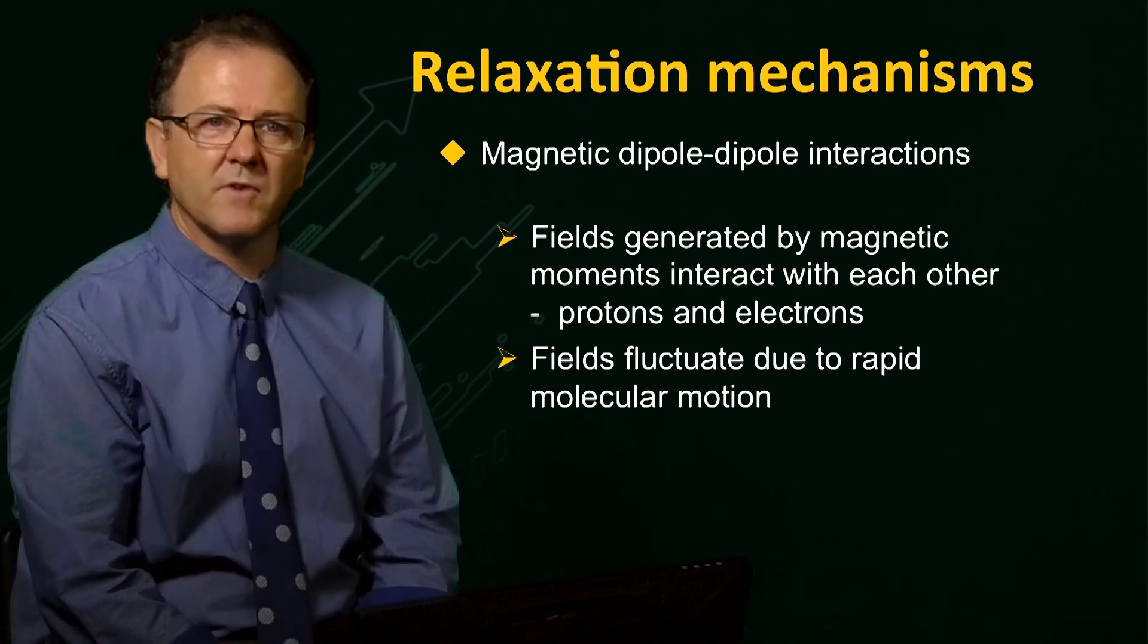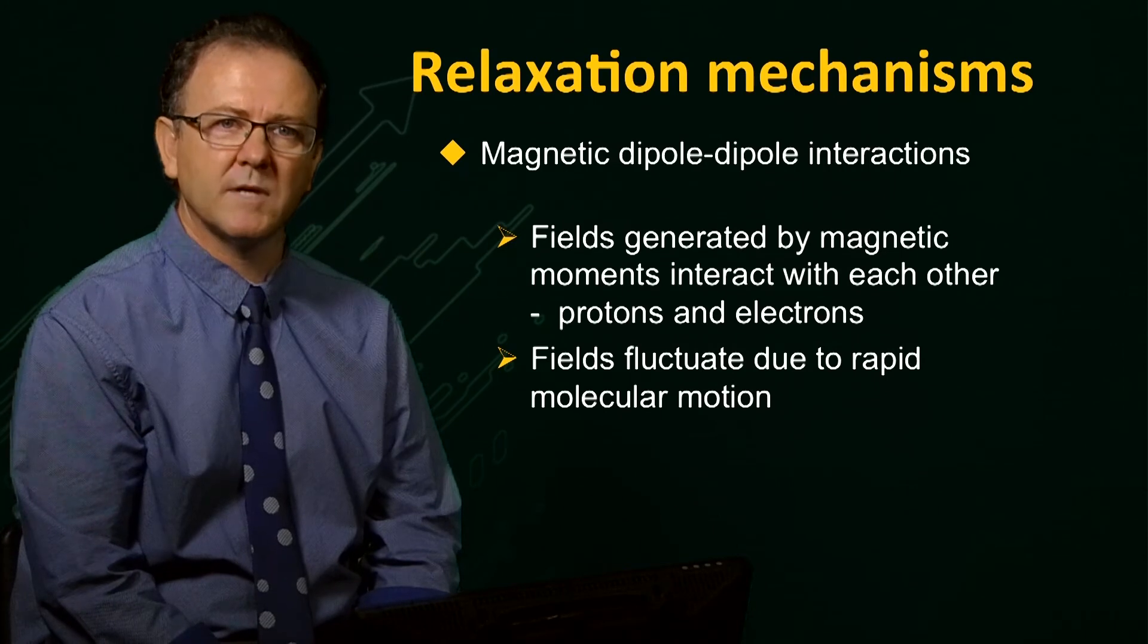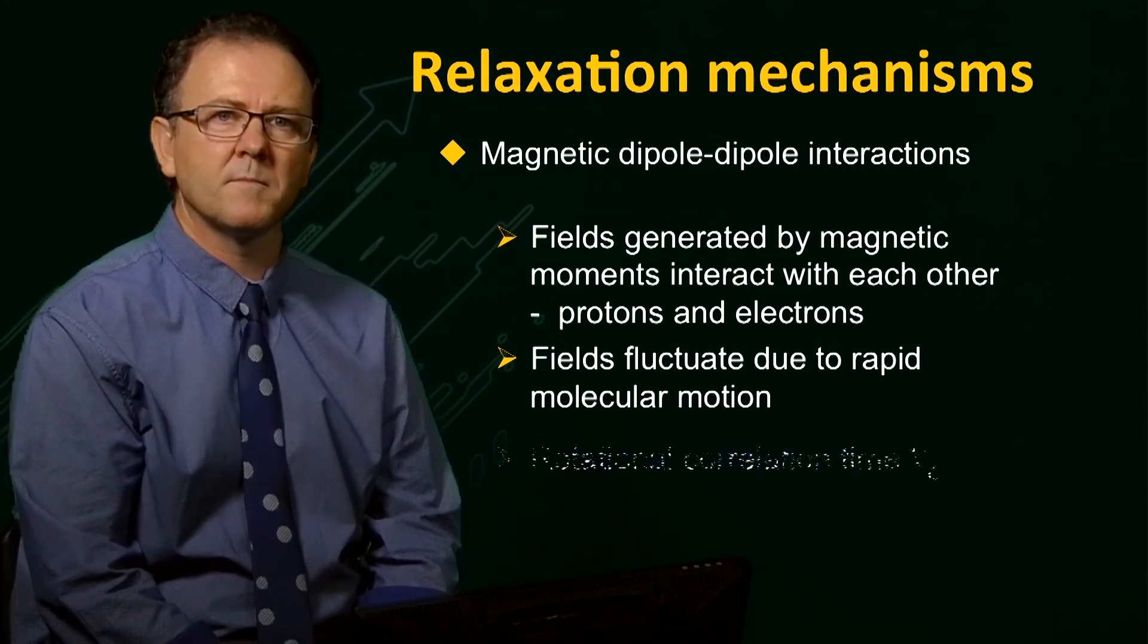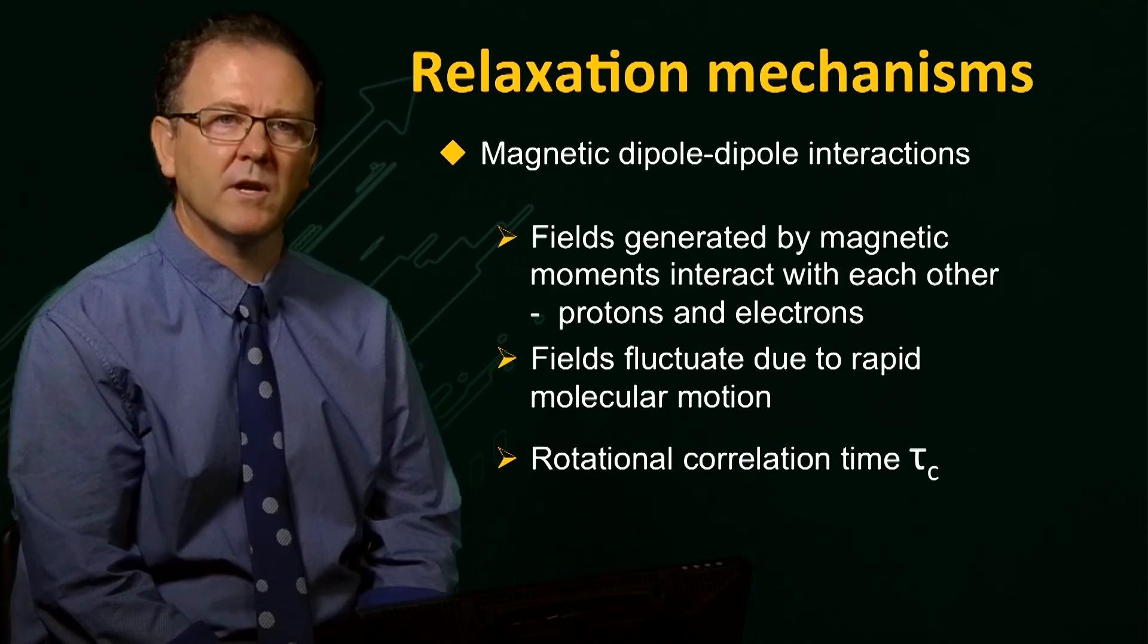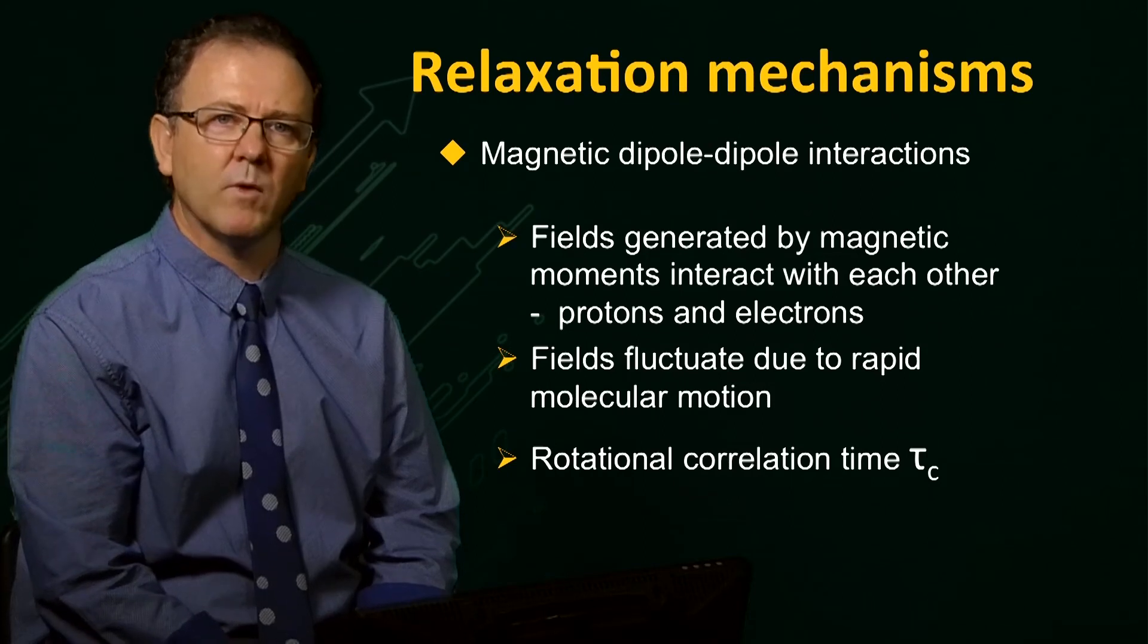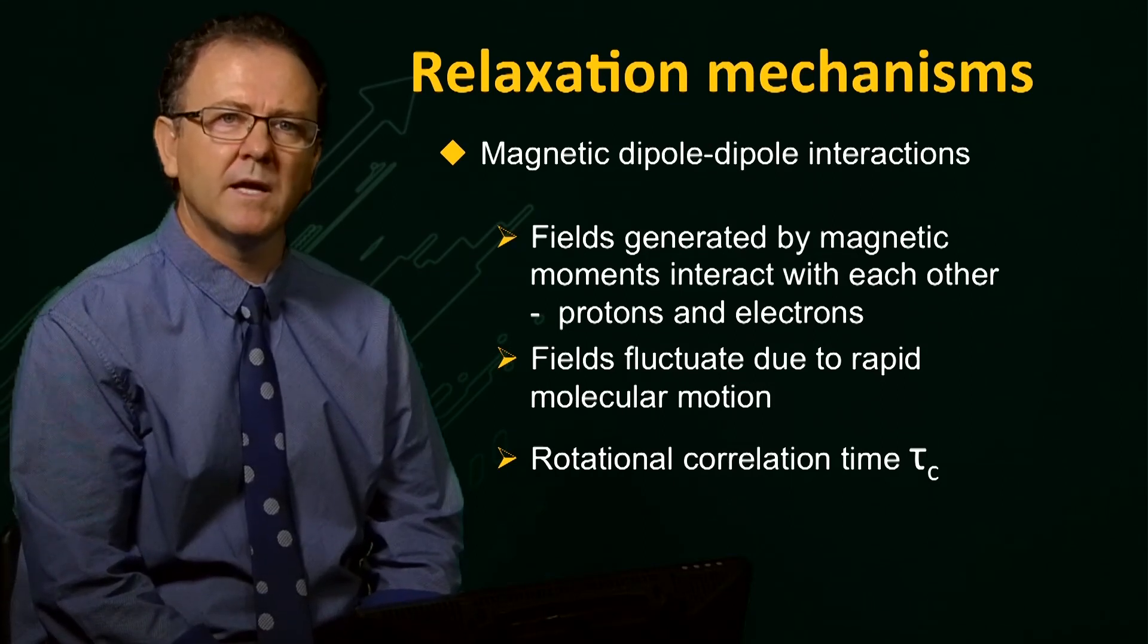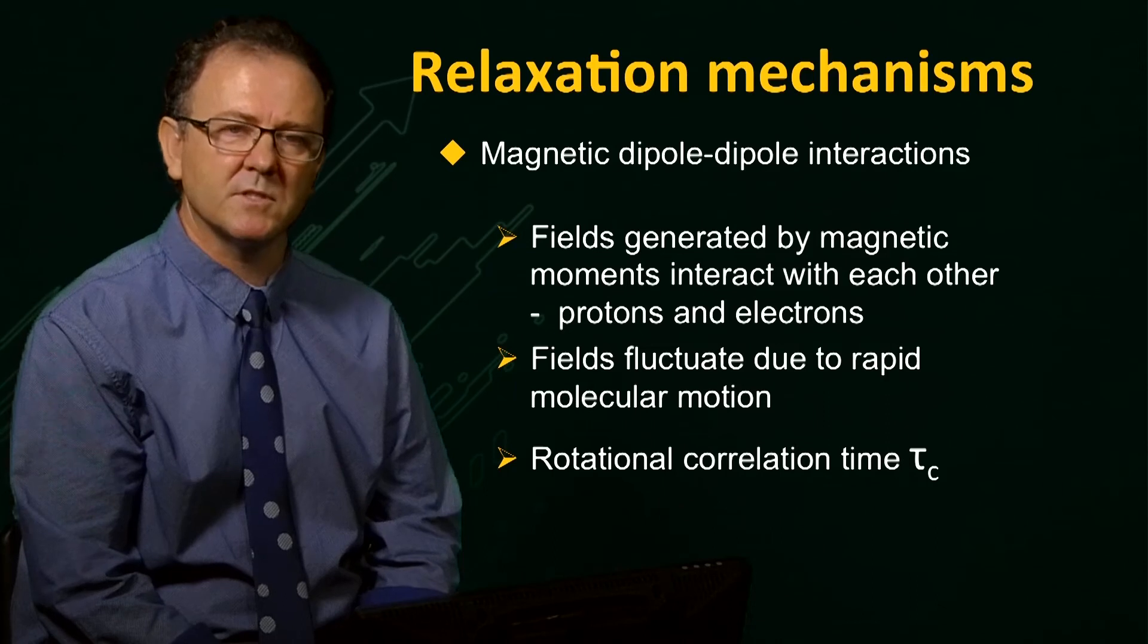These local fields fluctuate rapidly as the molecule tumbles and rotates within its environment. This molecular motion is characterized by a rotational correlation time, tau c, which is a measure of the rate of tumbling by the molecule and is affected by the temperature and viscosity of the system.